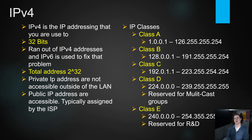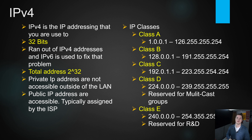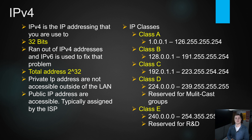IP classes A through E each have a designated range. Class E is reserved for research — you won't see it. Class D is for multicast — you probably won't see it often either. For people in the networking field, classes A through C are the ranges you'll encounter most. Notice there are gaps in some of these ranges; they're designed for particular purposes, most often private addresses.